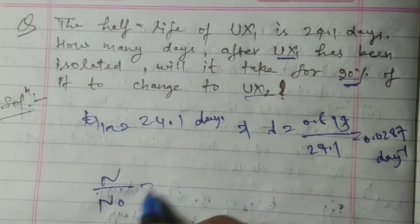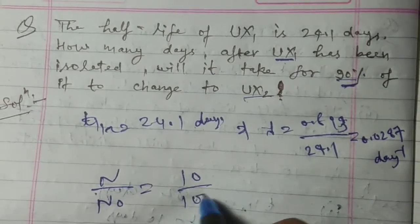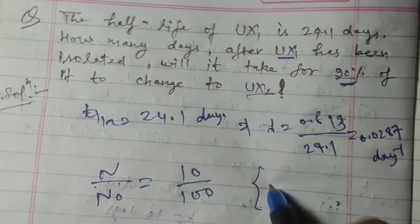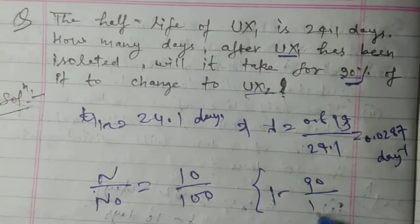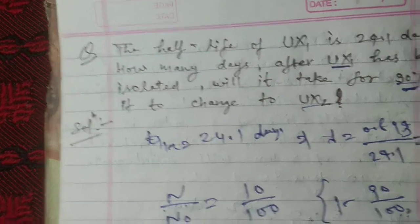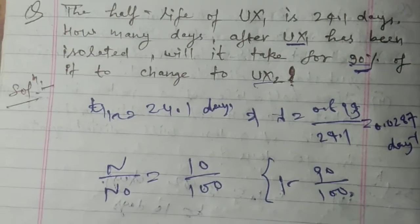Now the amount disintegrated is 90%, so this will give N upon N naught is equal to 10 upon 100, and this comes from 1 minus 90 upon 100.